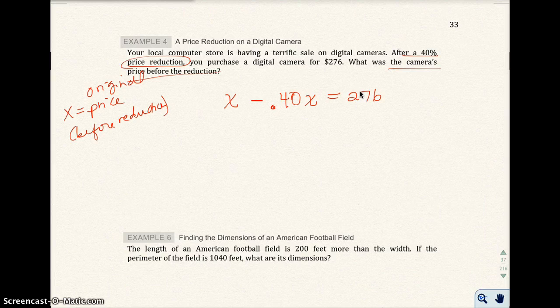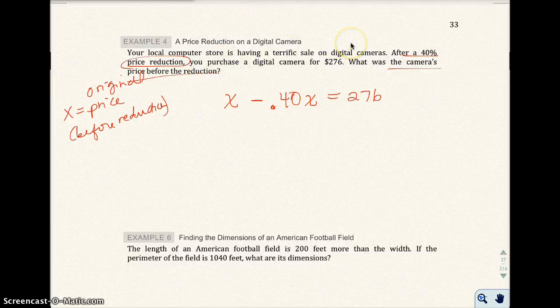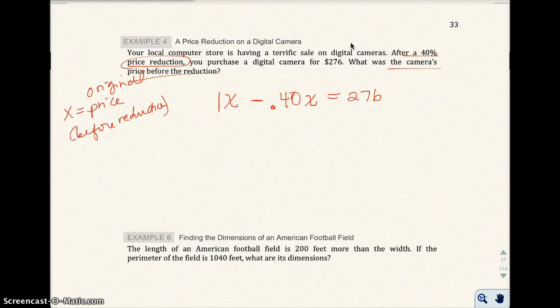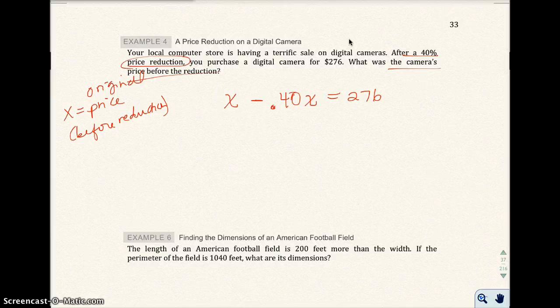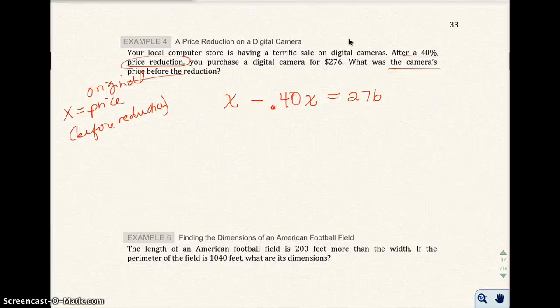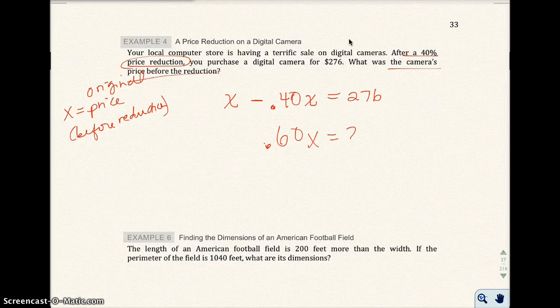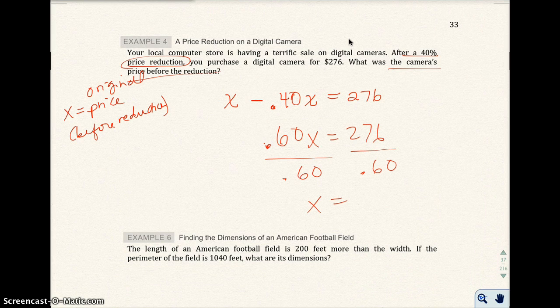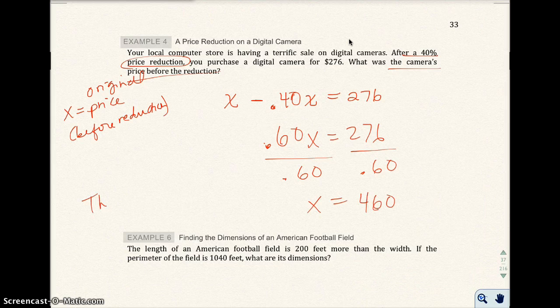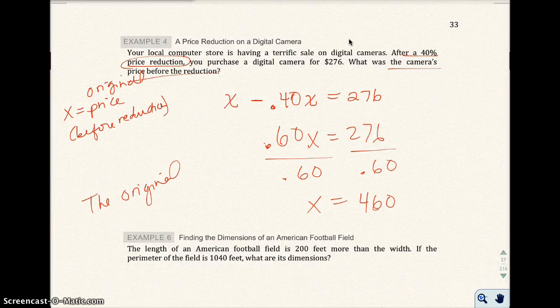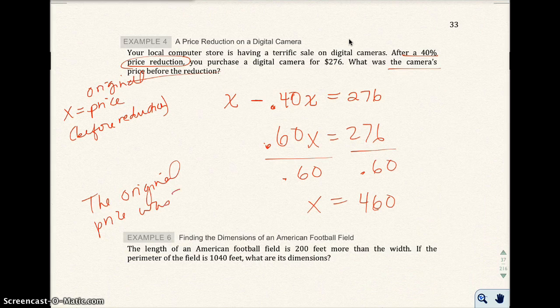Once I do that, I end up paying $276. Now on the left-hand side, these are actually like terms. This is actually 1x minus 0.40x. So now I have 1 minus 0.40, I get 0.60x equals 276. Divide everything by 0.60. I get x equals 276 divided by 0.60, which equals $460. The original price was $460.